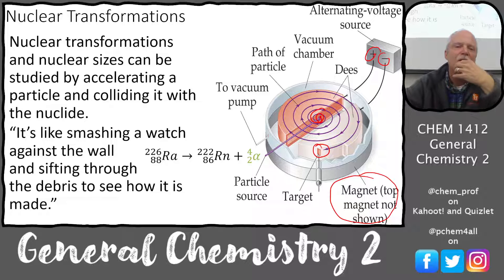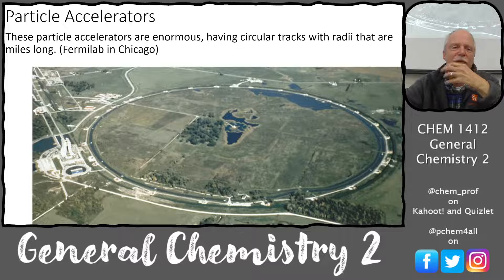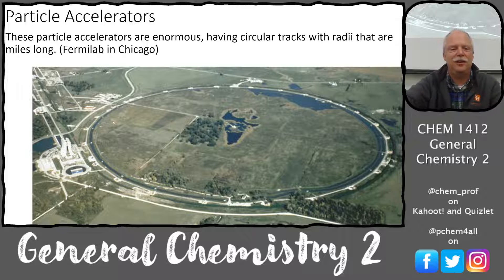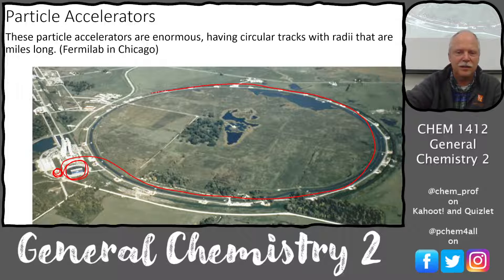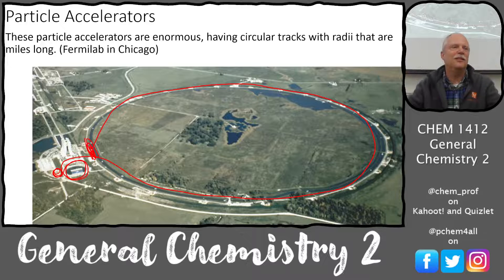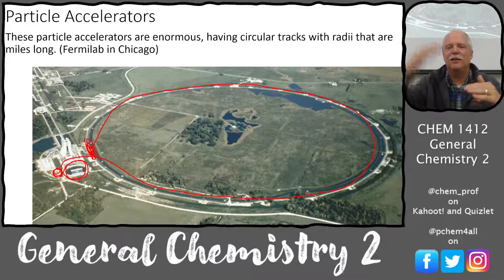This advanced to the Chicago particle accelerator, which has a circular track — smaller rings get particles up to speed, then feed into the large ring. These machines are miles in diameter, with a collision chamber where you smash particles together and observe the results. Fermilab pushed particle physics further, though it's dwarfed by CERN.